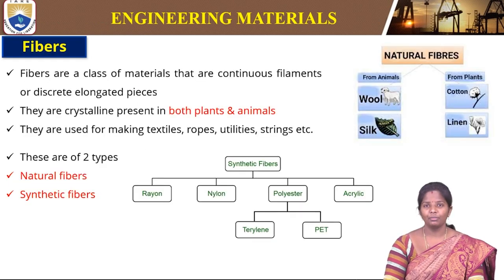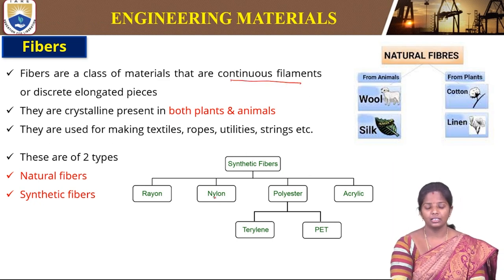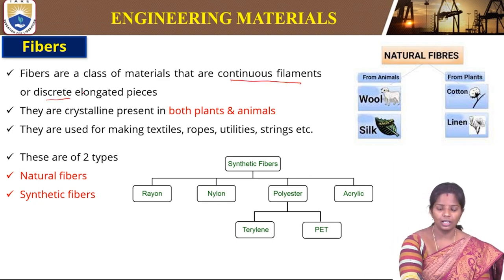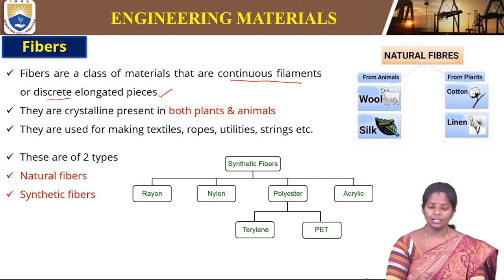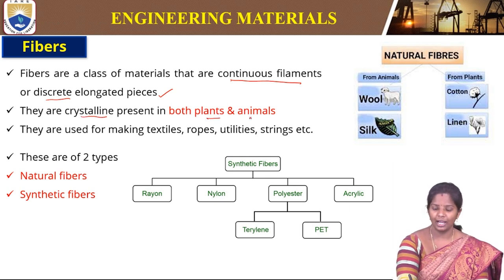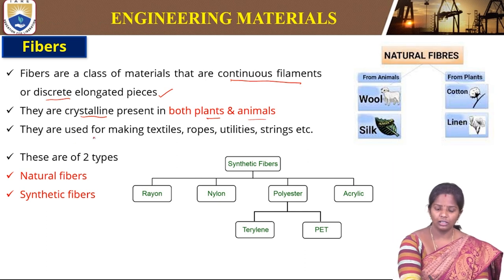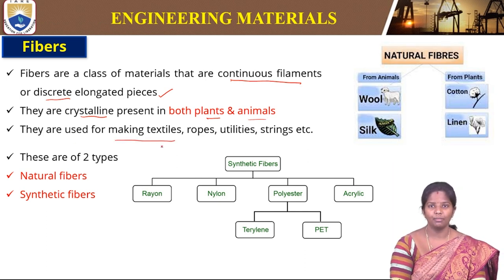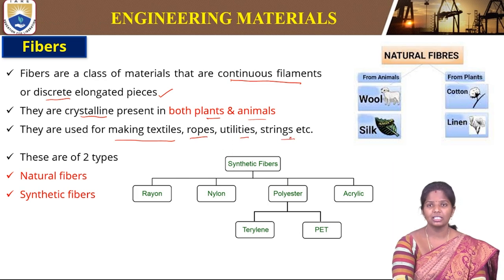Fibers are a class of materials that are continuous filaments, also called discrete elongated pieces. They are crystalline in nature and present both in animals and plants. They are used in textiles, making ropes, utilities, springs, strings, etc.